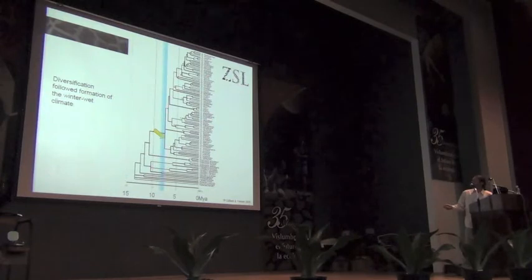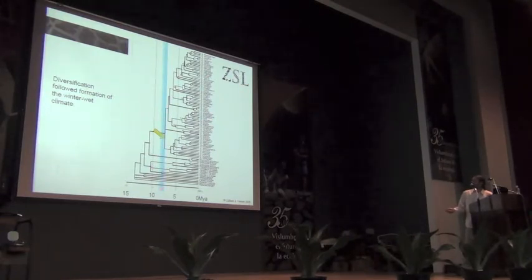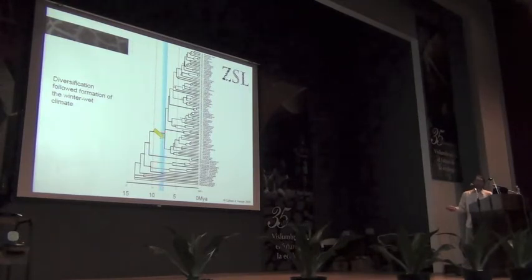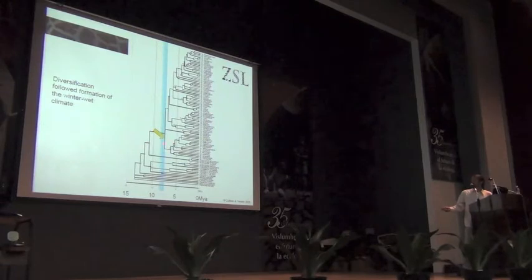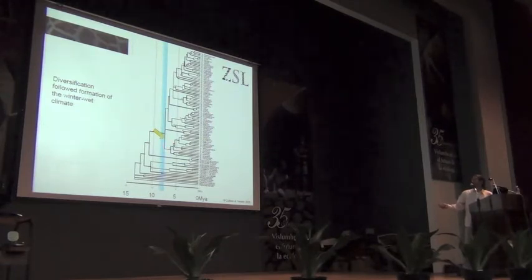The main crown diversification occurred at around 8 million years ago, and this is shortly after the formation of the Mediterranean climate. So we've got evidence for the appearance of our Mediterranean climate and then a diversification of this group.